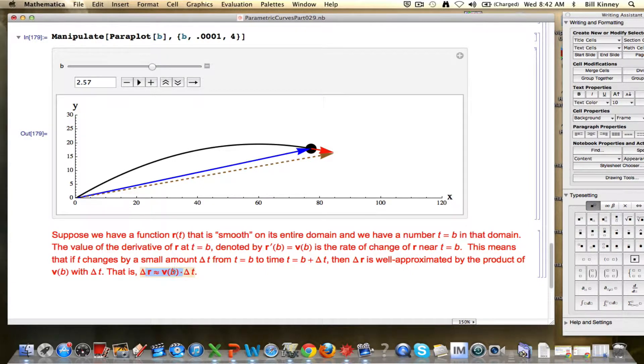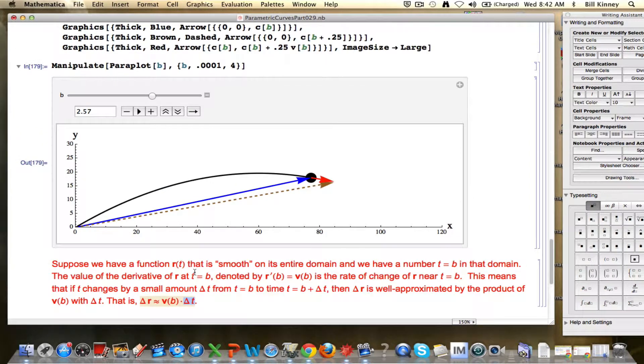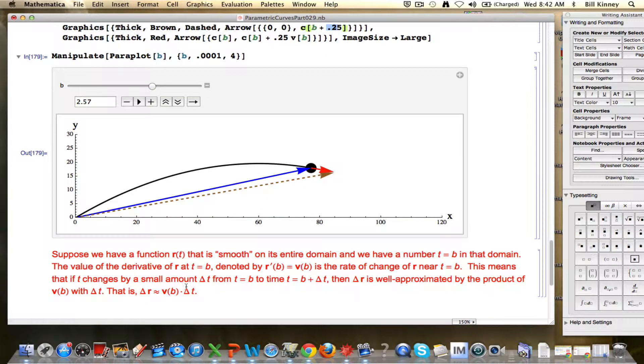Okay, let's look at this approximate equation. Delta R, I'm saying, is a vector that points from the tip of the blue arrow to exactly the tip of the brown arrow. V of B is the velocity vector, which I already talked about. Delta T is the change in time, which we're imagining to be small, and in fact we're imagining to be 0.25 in this case. What delta T does is it scales down the velocity vector to be this red vector so that you get that good approximation here.